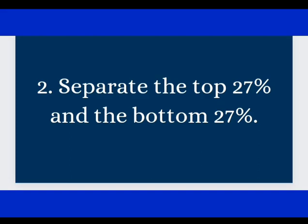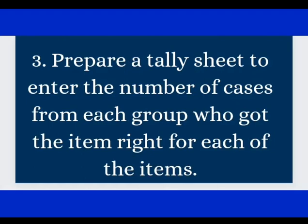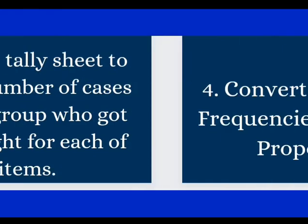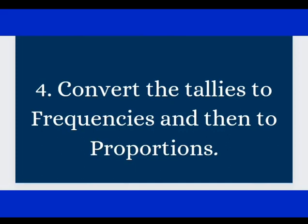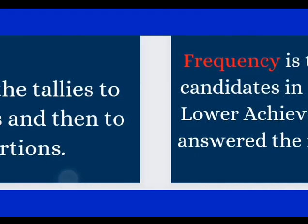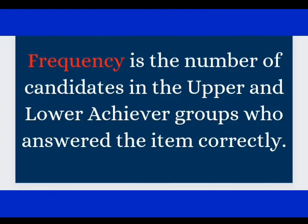Next is to prepare a tally sheet to answer the number of cases from each group who got the item right for each of the items, and then convert the tallies to frequencies and then to proportions. In the context of assessment, frequency is the number of candidates in the upper and lower achiever groups who answer the item correctly.